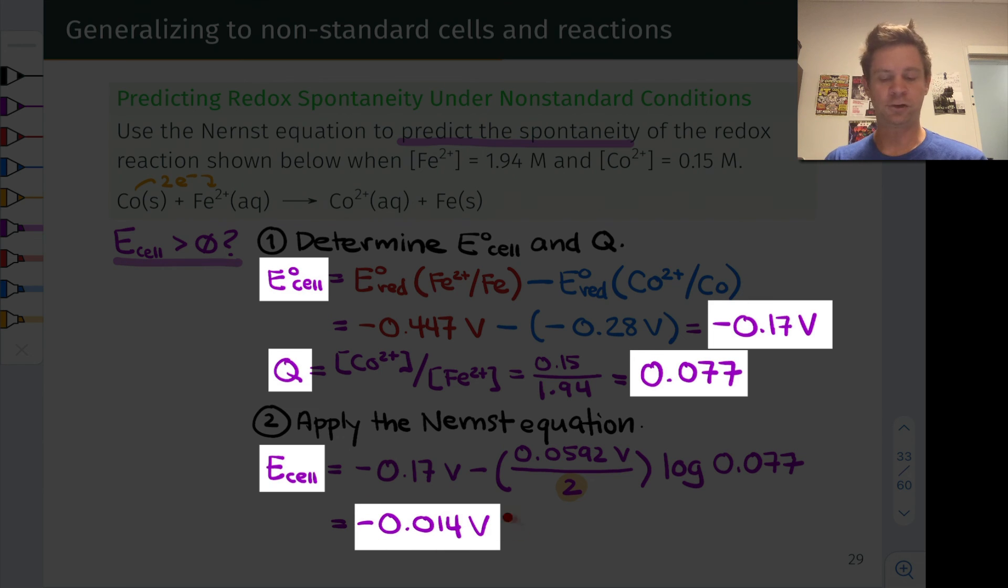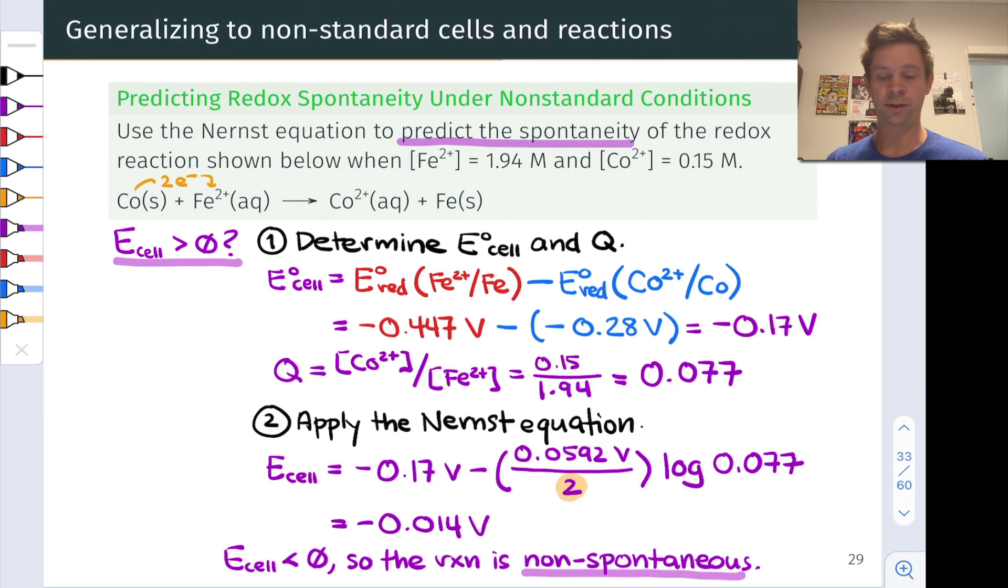But the cell potential is still negative. So this redox reaction under these conditions is still on the non-spontaneous side. Q is still greater than K is a way to think about this in the language of chemical equilibrium, meaning this reaction will run backwards spontaneously, not forwards. The forward reaction is non-spontaneous, as written. This is because the free energy change is positive. And in the language and concepts of electrochemistry, the cell potential, the non-standard cell potential, is negative.